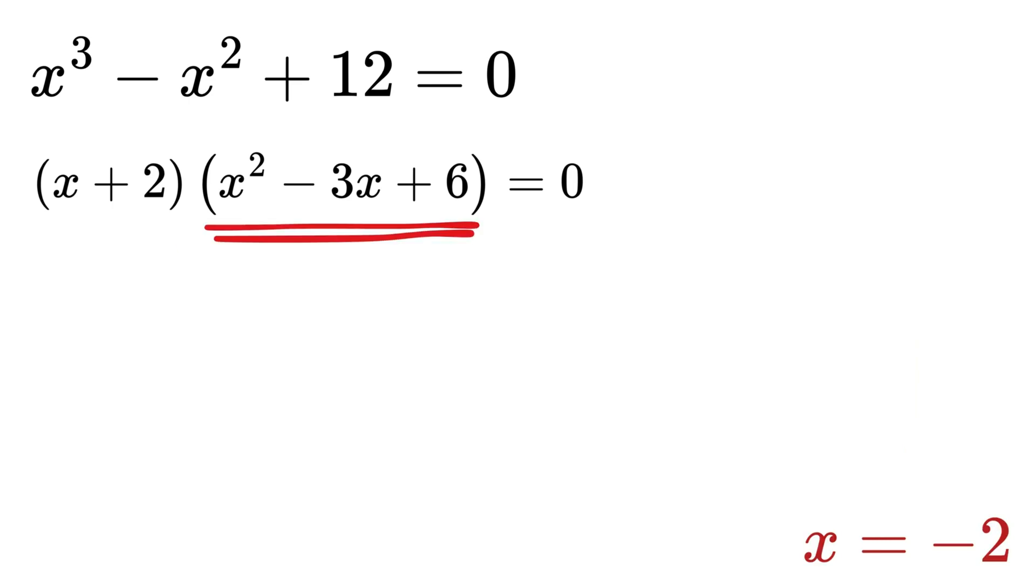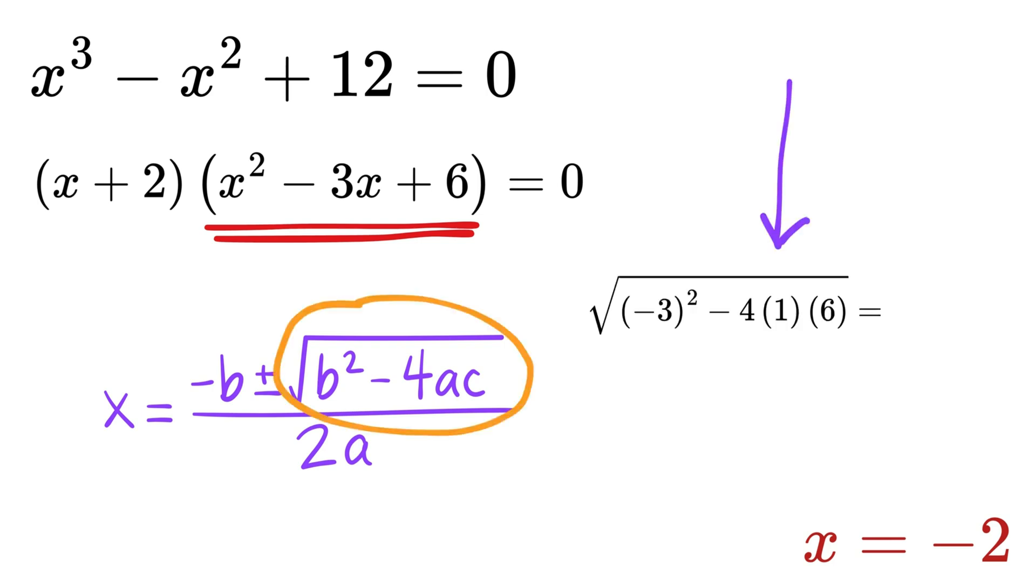And for this quadratic part, I will not bore you by solving the quadratic equation. We can simply use this quadratic formula. But just let me show you one thing that the part under the square root, or b squared minus 4ac, is negative, which means the roots are not real, or we can say complex in nature.